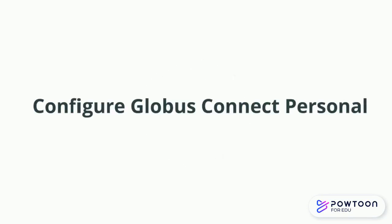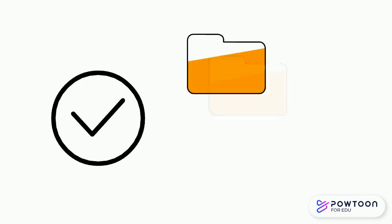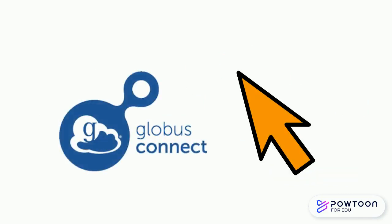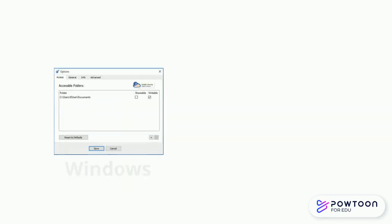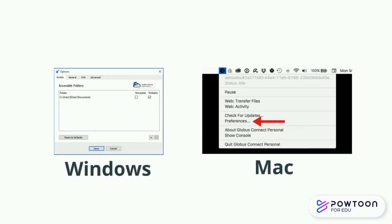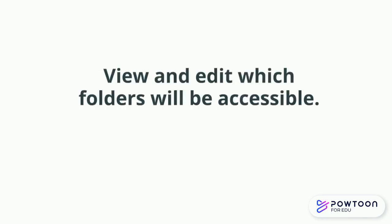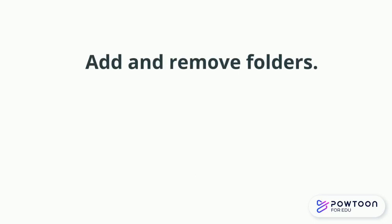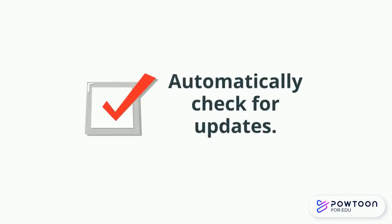Let's configure Globus Connect Personal. You will want to confirm which folders are accessible for file transfer and sharing. Right-click on the Globus Connect Personal icon and select Options on Windows or Preferences on a Mac to select Accessible Directories and Files. Select Access to view and edit which folders will be accessible via Globus. Your home directory is listed by default. Add and remove folders by selecting the plus or minus icon. We recommend that you leave the 'Automatically Check for Updates' box checked to ensure you are running the most stable and secure version of Globus Connect Personal at all times.